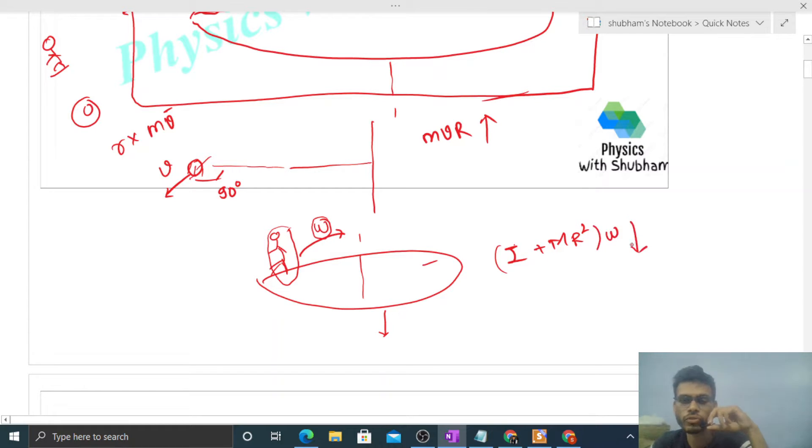So final angular momentum should also be zero, means you can equate the upward and downward angular momentum. From here you will get the value of omega, that is mvr divided by I plus mr squared.